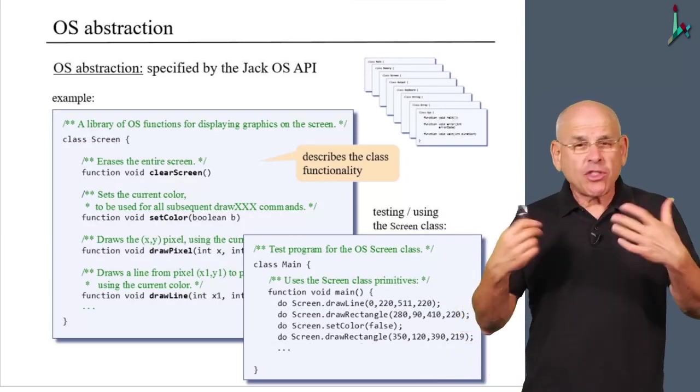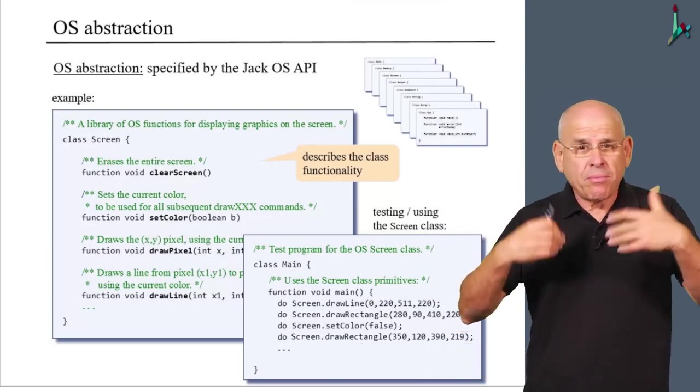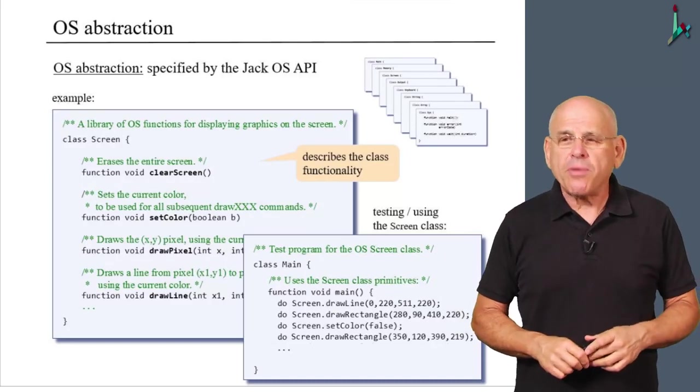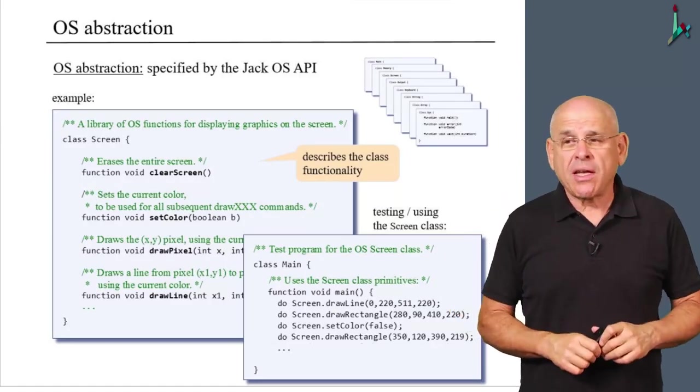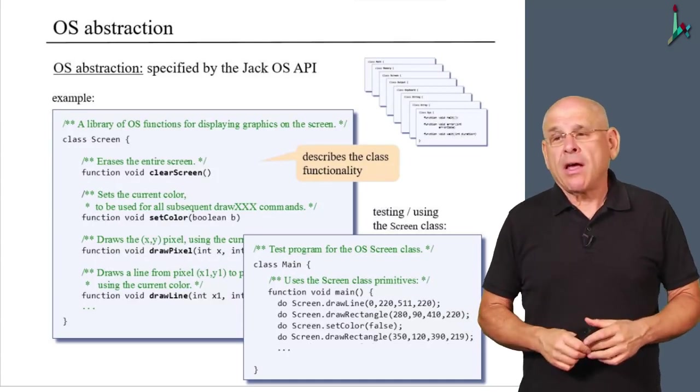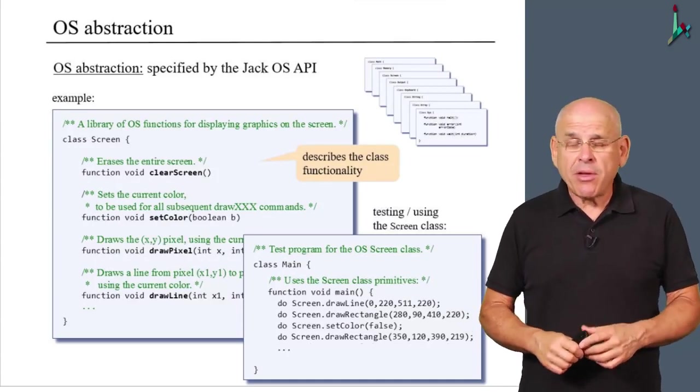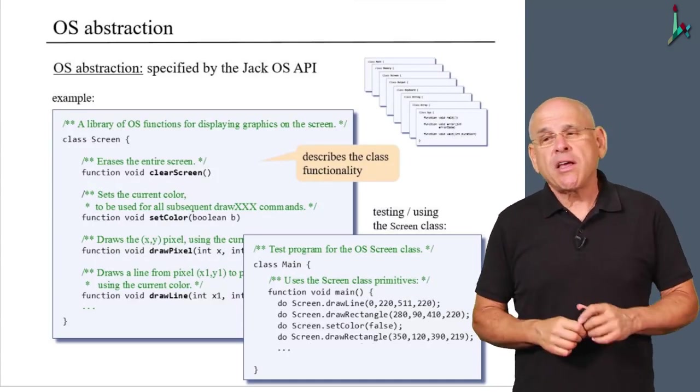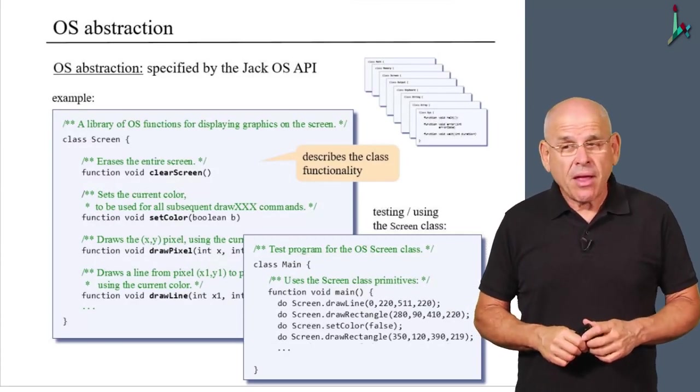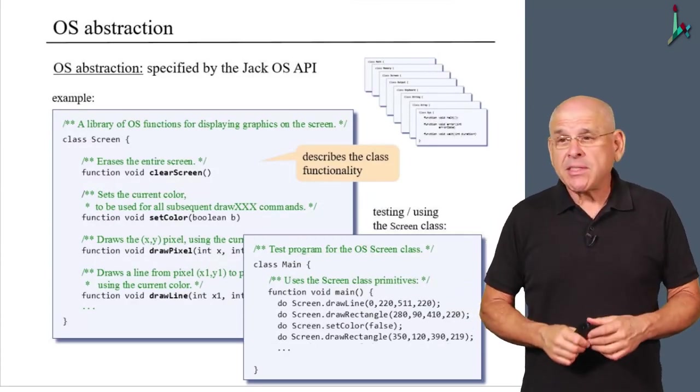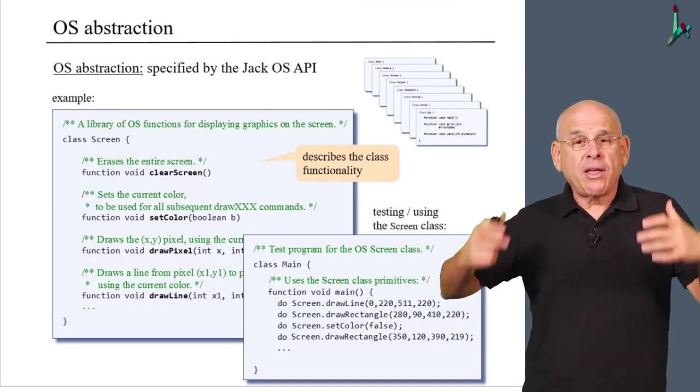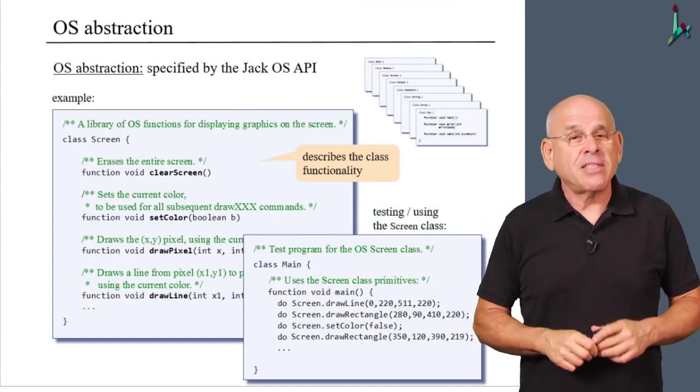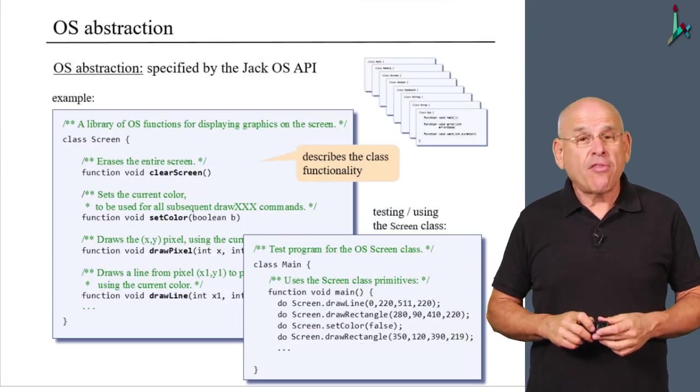Now, if this were an introduction to computer science course or many other courses in computer science, then we would have been content with this level of description, the API of the operating system, because we view the OS from a user's perspective. But in Nand2Tetris, we don't take anything for granted, and so we are going to actually build and realize this operating system from scratch.